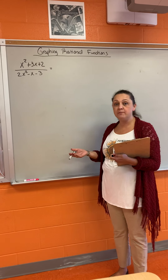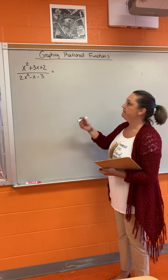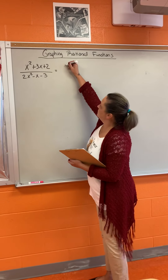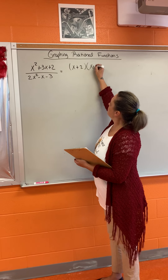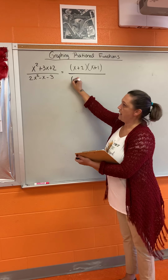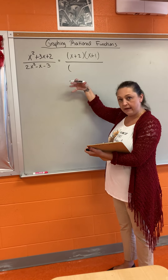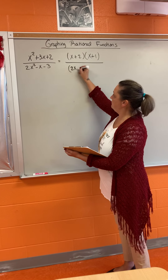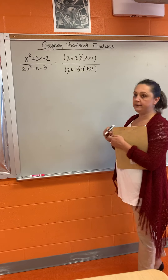I'm going to go through an example of graphing rational functions. The first thing you have to do is factor the top and the bottom. This top factors to (x + 2)(x + 1), and the bottom — I'm not going to go into detail of how I factored this, so if you need help factoring, you can let me know. The bottom factors to (2x − 3)(x + 1).